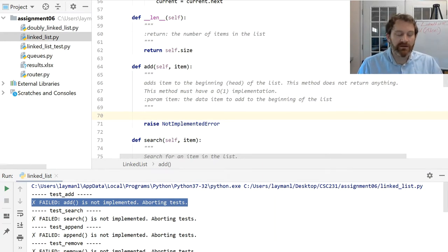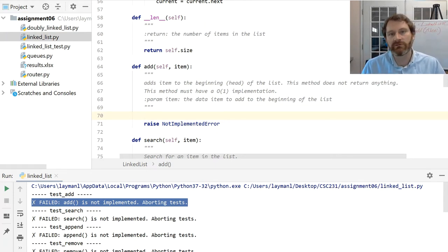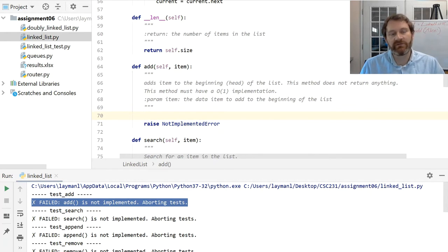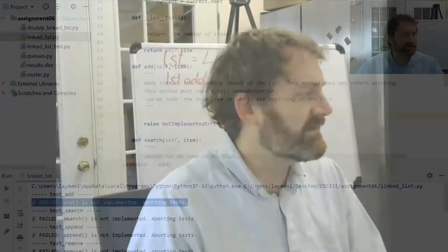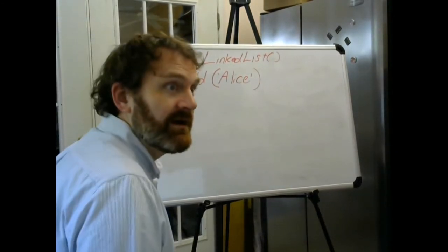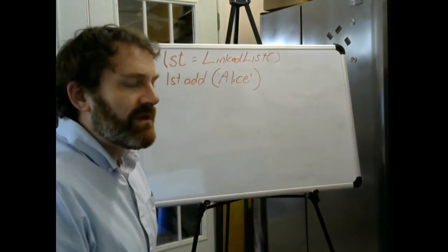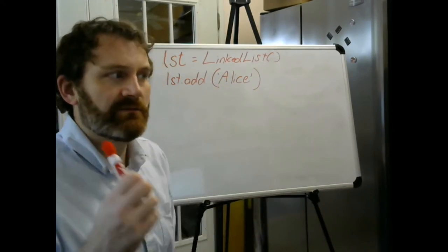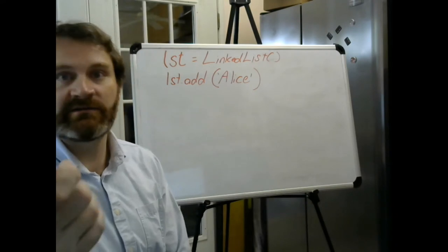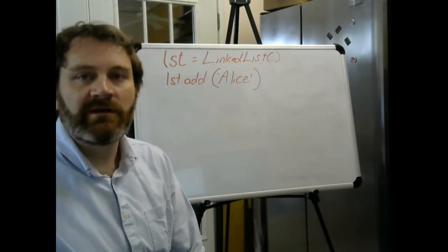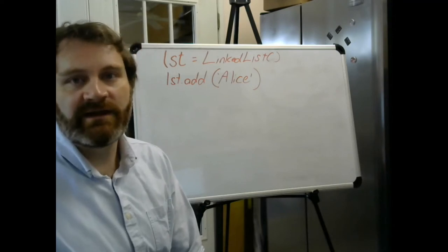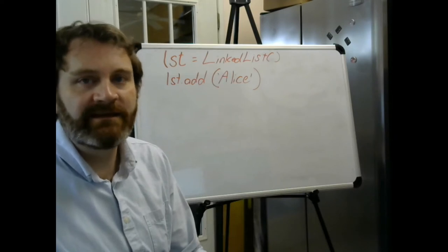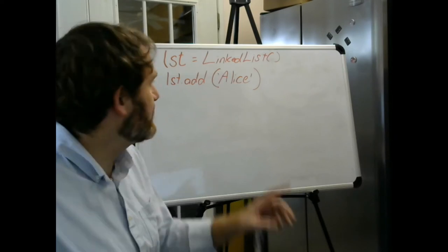Let's start implementing. Step one of our programming mantra is to think about how you want to approach the problem. Let's think about this in terms of the special cases it might run into — that's usually a good starting place. So I'm switching over to my whiteboard. We're talking about the add method. When we start out by calling the constructor with a linked list, we instantiate an empty linked list — there's nothing there at the beginning. Head and tail of the list are both going to be None when this first line executes.